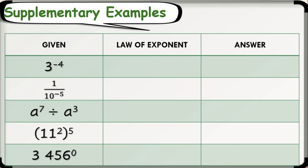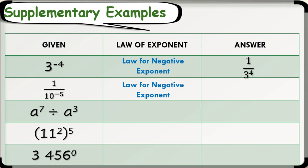Now, let's answer together these following supplementary examples. First, we have 3 raised to negative 4. In this example, we will apply the law for negative exponent, so our answer will be 1 over 3 raised to 4. Next is 1 over 10 raised to negative 5. Again, we will apply the law for negative exponent, and our answer is 10 raised to 5.